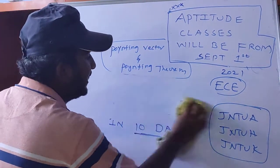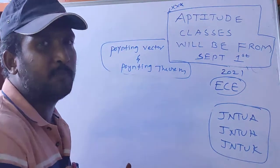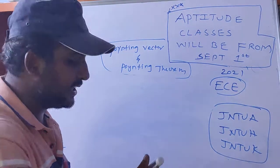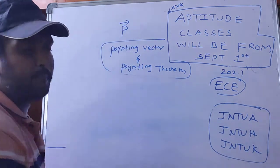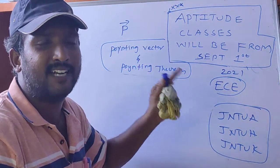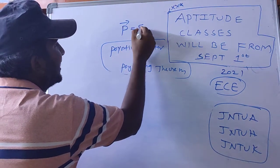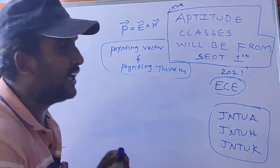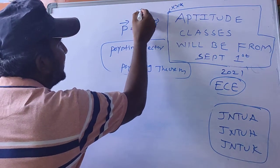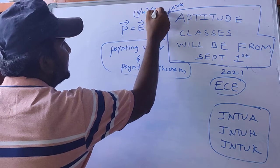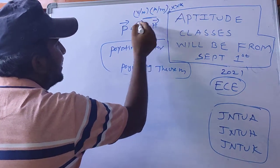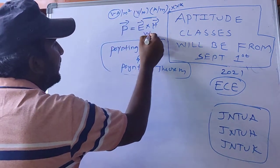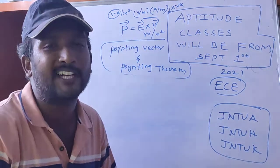Poynting vector is denoted by the letter P with an upward arrow indicating it is a vector. Poynting vector is defined as the cross product — or curl — of electric field intensity and magnetic field intensity. The units of electric field intensity are volts per meter and the units of magnetic field intensity are amperes per meter. Doing the cross product gives volt-amperes per meter squared, and since volt-ampere is the unit of power, the units of Poynting vector are watts per meter squared.